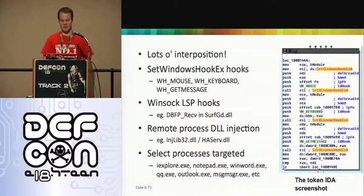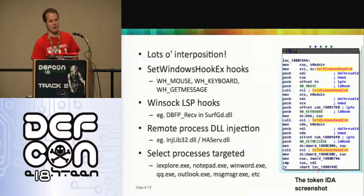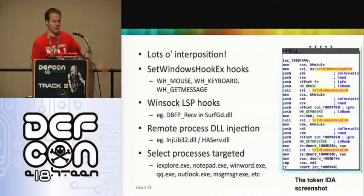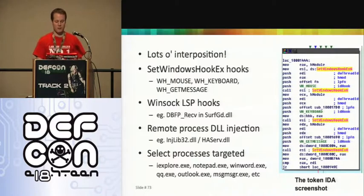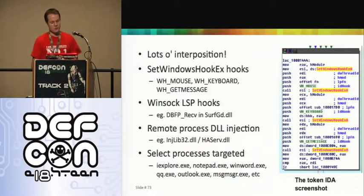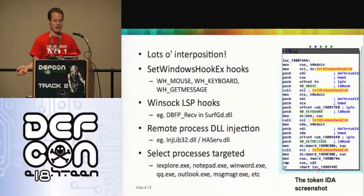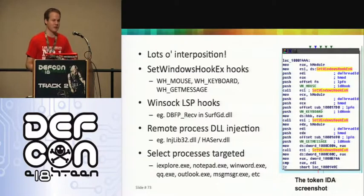Green Dam employs a wide range of interposition mechanisms. The most familiar to those who know rootkits are ring-3 rootkit techniques. It hooks the SetWindowsHook API, which allows notification of window messages or keyboard activity — poorly written keyloggers use this to capture keystrokes. It also uses the Winsock LSP — the layered service provider — which is a headache for normal users; when people install LSPs and try to remove them it usually breaks the entire Winsock stack. Green Dam hooks traditional Winsock socket calls to inspect traffic going in and out of the system.